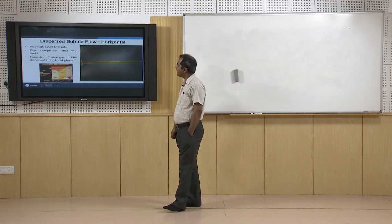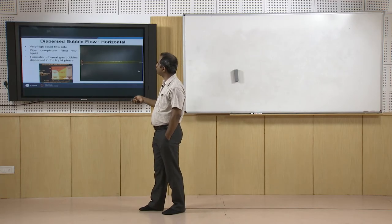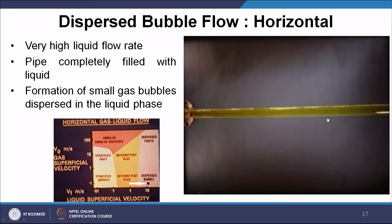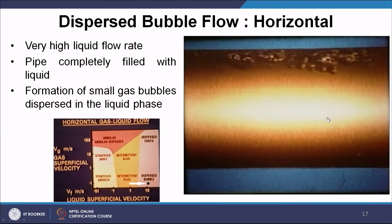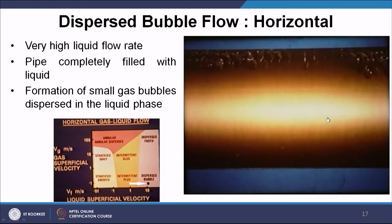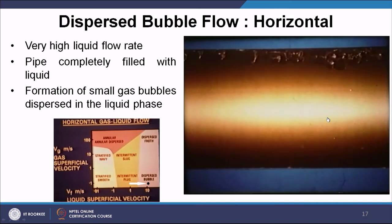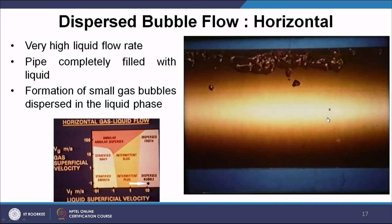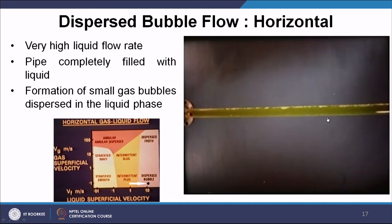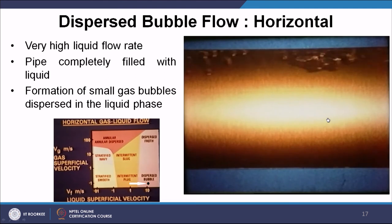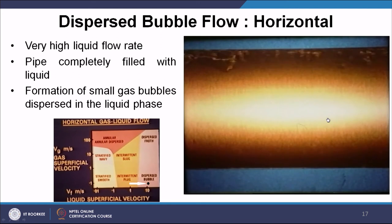Dispersed bubbly flow occurs when the liquid superficial velocity is increased further so the pipe is completely filled with liquid. Small gaseous bubbles form at the top of the pipe — bubbles are not present in the lower portion, with the majority at the top. This pattern forms at higher liquid superficial velocities and very low gas superficial velocities.